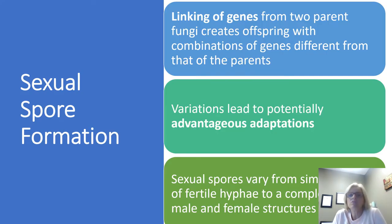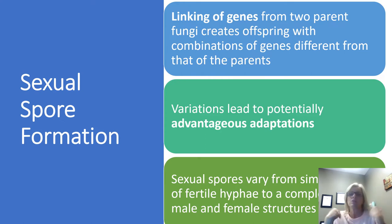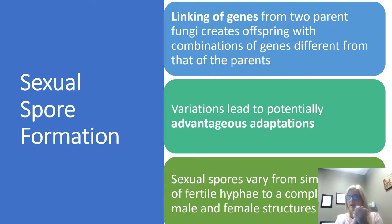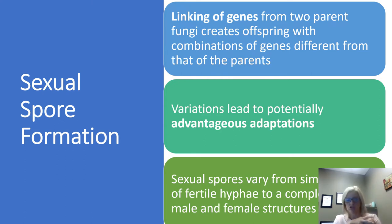Most fungi produce sexual spores at some point using many different methods. They can link genes from two parent fungi, creating offspring and shuffling genes from each parent. These variations can provide advantageous adaptations — getting back to natural selection. Sexual spores can vary from simple fusion of fertile hyphae to a complex union of male and female structures, giving fungi both asexual and sexual forms of reproduction.